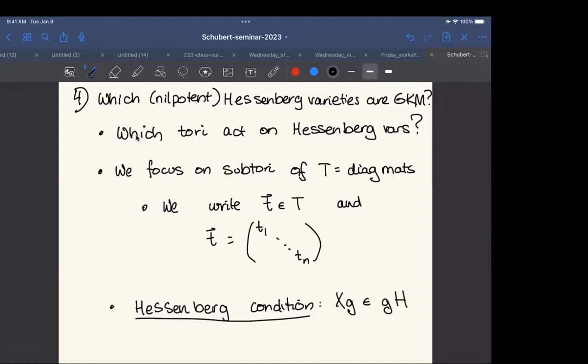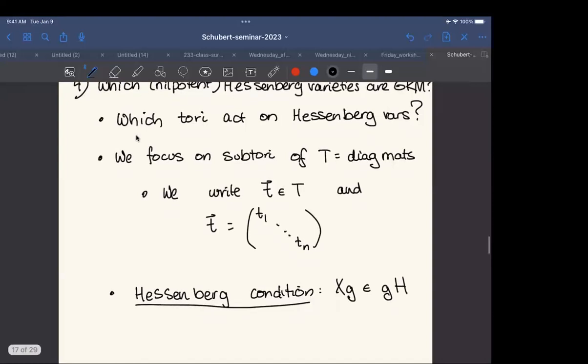And I'm going to go back to what is the Hessenberg condition? So when I started, I sort of had this condition, x of the i is contained in the H of i. So then I also represented my flag with a matrix. So then I said, this is the i-th column of this matrix. And when I say that x times the i-th column of a matrix is contained in, well, I'm really saying the span of the first H of i columns of the matrix.